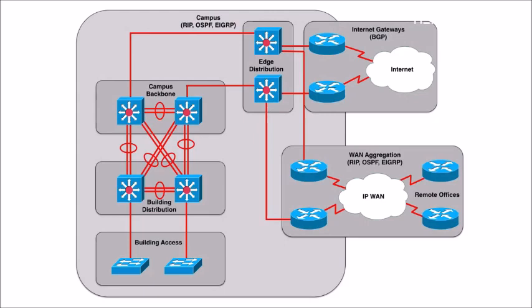First, let's take a look at the building access layer of an enterprise network. Notice this is part of the campus network — the network considered to be part of a main corporate location like the headquarters. The building access layer oftentimes contains layer 2 switches, like Cisco Catalyst switches, connecting out to end-user devices such as PCs and printers. These switches might be configured to do authentication using 802.1X, and we might have different VLANs, different broadcast domains, configured on these switches.